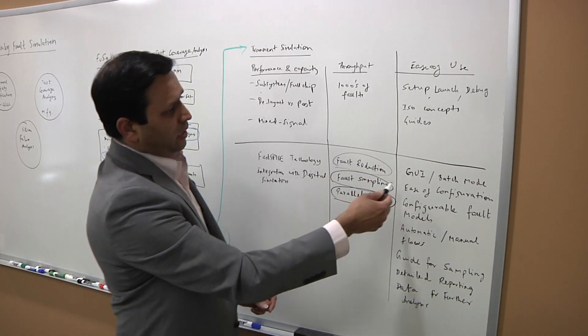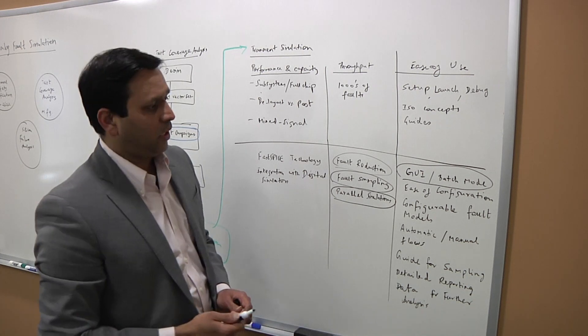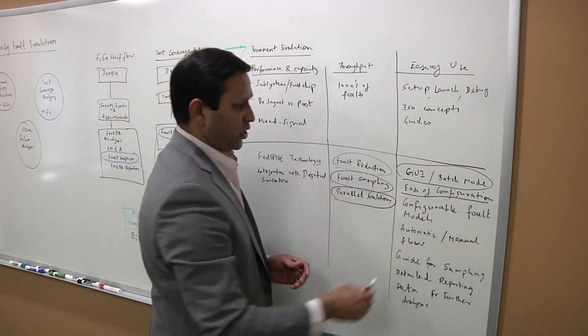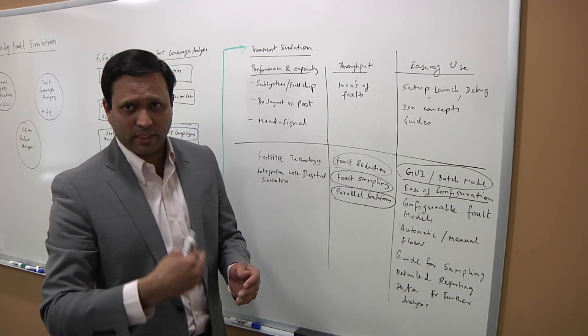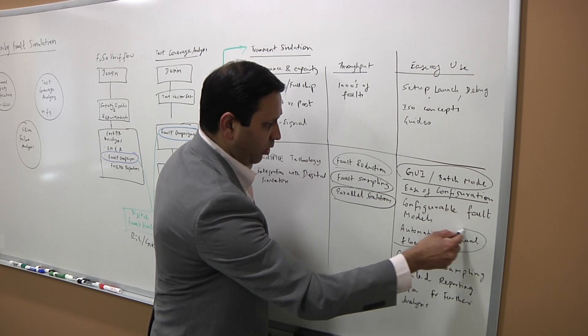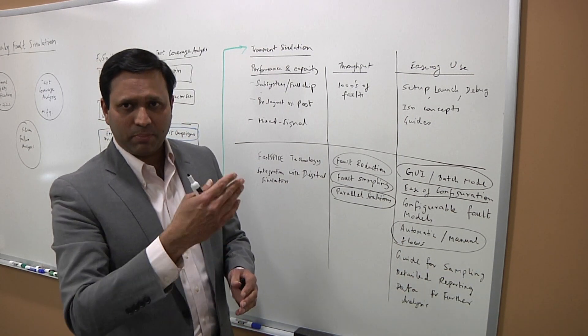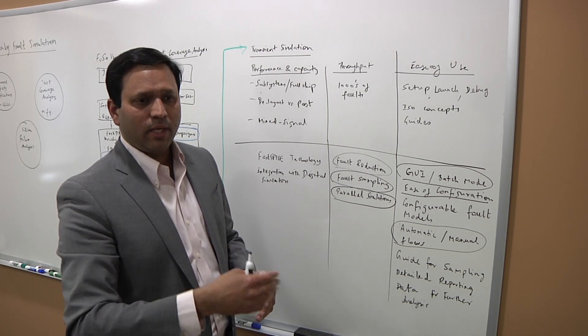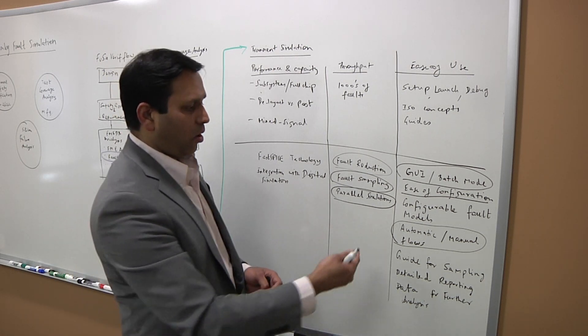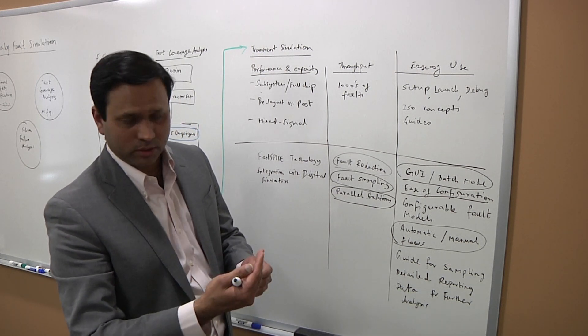And on the ease of use side, again, flexibility to use a batch mode or a GUI, if you will. Ease of configuration. When I say configuration, I'm talking about fault models and so forth. And then automatic and manual flows where you can do a seamless one step, if you will, type a fault simulation. You do everything. Fault identification, reduction, simulation, and output reporting. Or you can do a manual where you can insert manually certain faults and that the flexibility is very important.